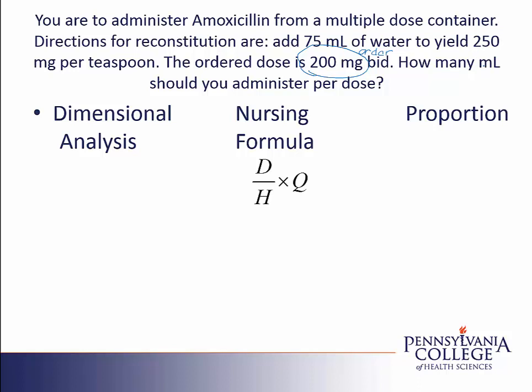Because we're asked how many milliliters we should administer, we'll have to convert teaspoons to milliliters at some point in our problem. You'll notice that we did not use the 75 milliliters — this amount would be added to the container, but it is not a fraction, so we don't know how many milligrams are in the 75 milliliters. We have to use the fraction that gives us the strength, the amount of med per volume, in order to solve the problem.